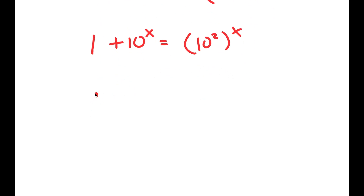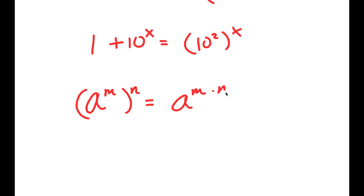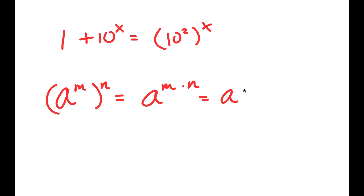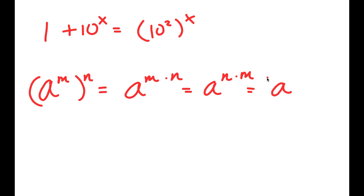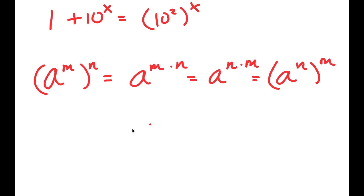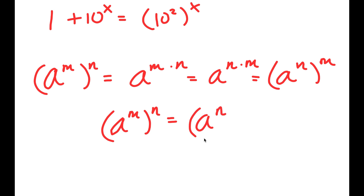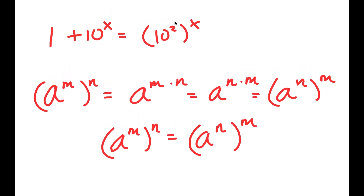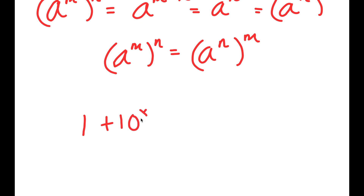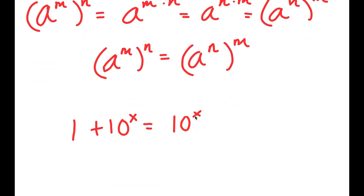Now, if I have something in the form a to the power of m to the power of n, this is equal to a to the power of m times n. And since multiplication is commutative, a to the power of m times n equals a to the power of n times m, which means a to the power of m to the power of n equals a to the power of n to the power of m. So for 10 squared to the power of x, I can switch the 2 and x, giving me 1 plus 10 to the power of x is equal to 10 to the power of x to the power of 2.